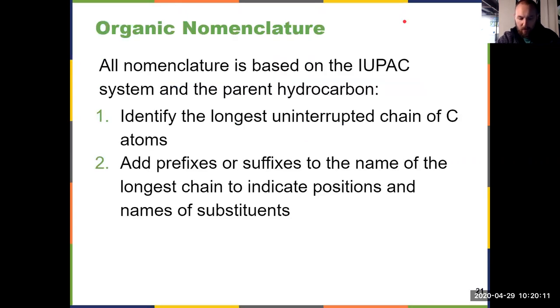All of the nomenclature that I test is based on IUPAC, the International Union of Pure and Applied Chemistry. We use that system, which is based on naming what's called the parent hydrocarbon, which we kind of alluded to before looking at isomers. It's the longest uninterrupted chain of carbon atoms. How far can you trace with your finger without doubling back on yourself? That's the root of our name, that longest uninterrupted carbon chain. And then we add prefixes or suffixes to that to discuss substituents and where they are, things like functional groups.